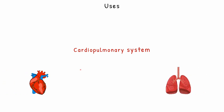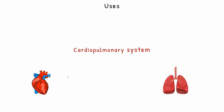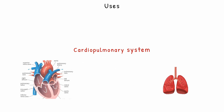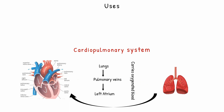To know about the uses of Riociguat, we first need to understand the cardiopulmonary system and how it works. The organs involved are the heart and lungs. The blood filled in the right ventricle is pumped through the pulmonary artery, carrying deoxygenated blood to the lungs, where O2 and CO2 exchange occurs. Then pulmonary veins carry oxygenated blood from the lungs to the left atrium, filling the left ventricle.